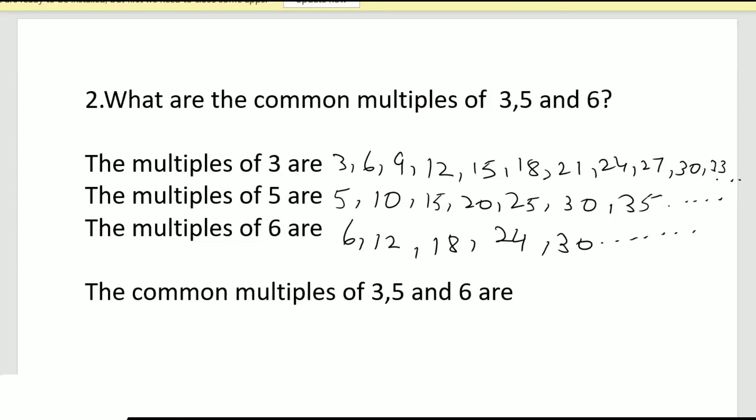Well here, okay, we can just see here 30 is there, 30 is there, and 30 is there. And so that means the first common multiple of 3, 5, and 6 is 30. So the next one would be 60 and it would go on like this.